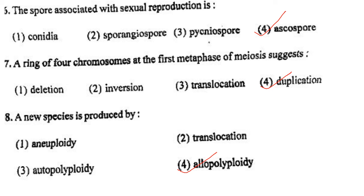Next one: The ring of 4 chromosomes at the first metaphase of meiosis suggests option 1, deletion; option 2, inversion; option 3, translocation; option 4, duplication. Answer is option 4: duplication.